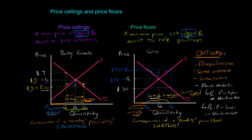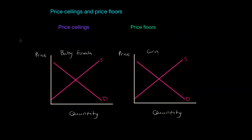In our last video we looked at situations in which government intervenes in the markets for particular goods and either imposes a price ceiling or a price floor intended to either help consumers or producers. In this video we're going to talk about a slightly different situation in which the price controls imposed by government are what we call non-binding. So we'll look at non-binding price ceilings and non-binding price floors.